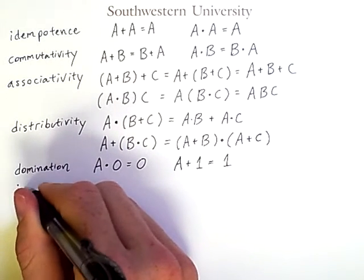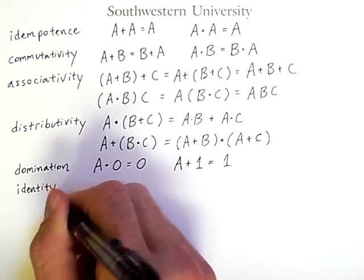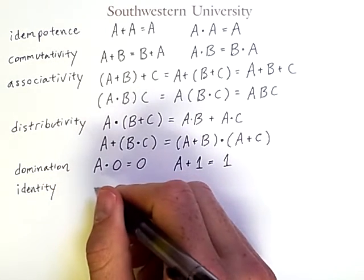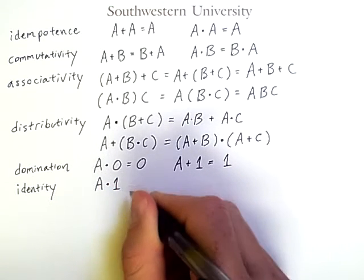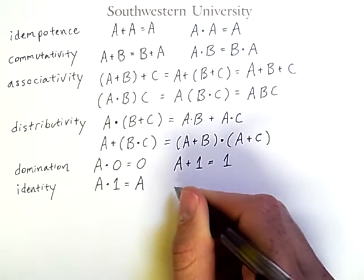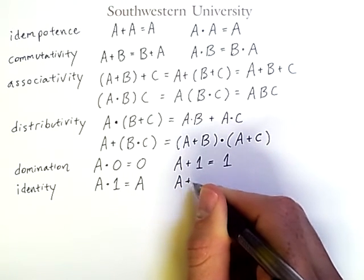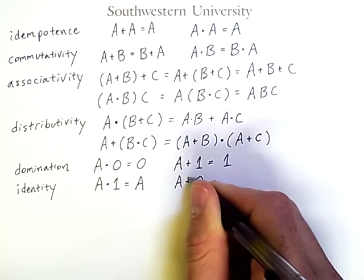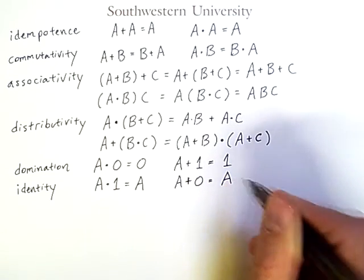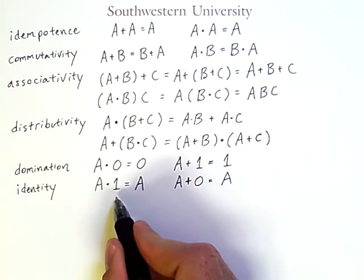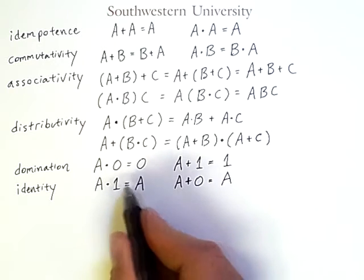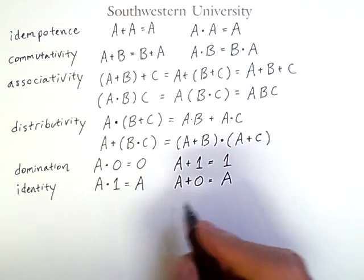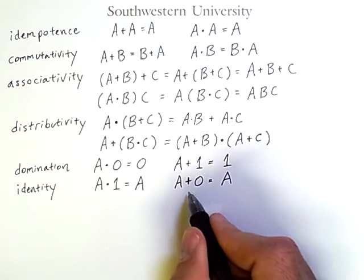There are also identity laws. These indicate that A AND 1 equals A and A OR 0 equals A. We say that 1 is the identity element of AND because if you take A AND 1, you get back the element you put in initially. Similarly, 0 is the identity element for OR.